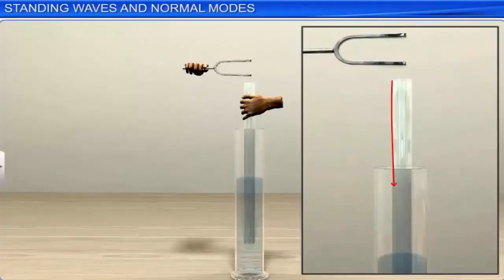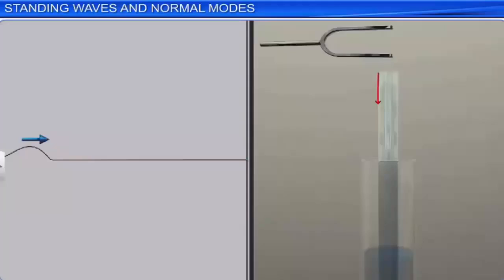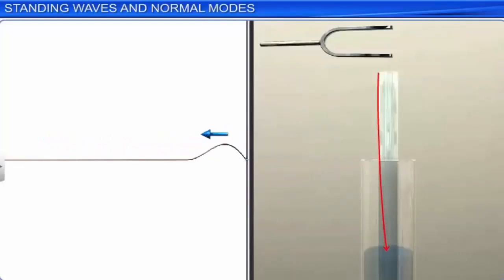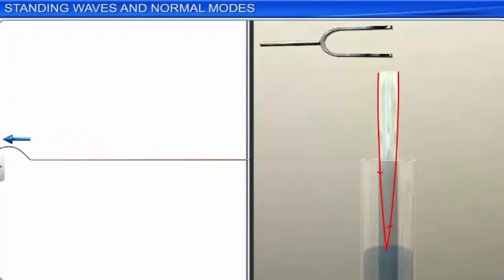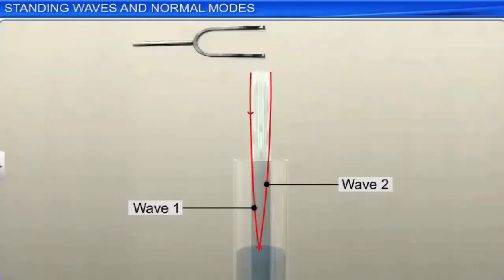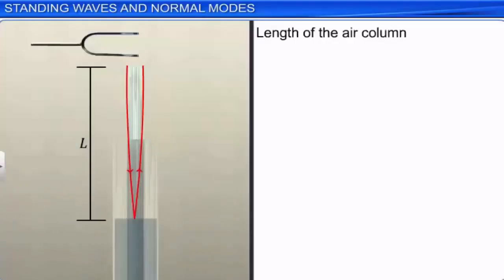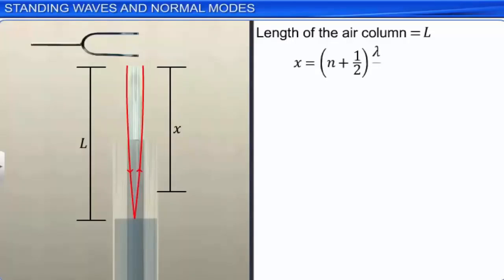This is similar to the reflection of waves in a string that is fixed to a ring, where the ring runs up and down the rod without friction. These two waves travelling in opposite directions are in phase. We get an antinode at the open end of the pipe. Let the length of the air column be equal to L. The position of the antinode is expressed as x = (n + 1/2)(λ/2), for n = 0, 1, 2, 3, and so on, representing the positions of the antinodes.